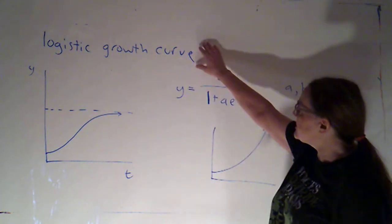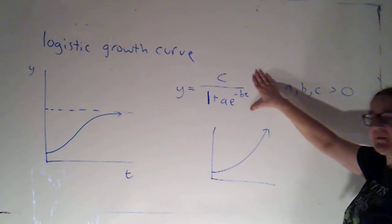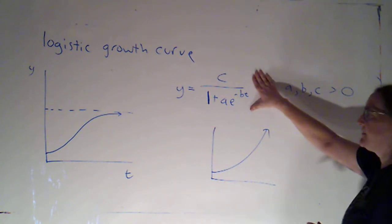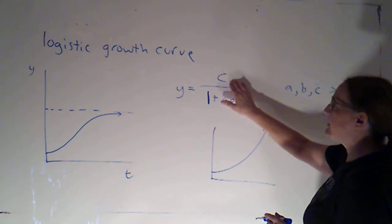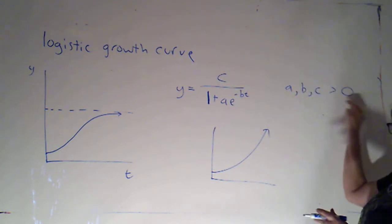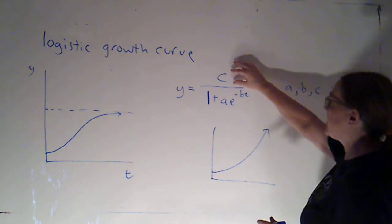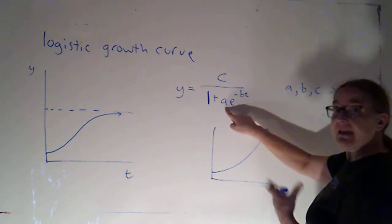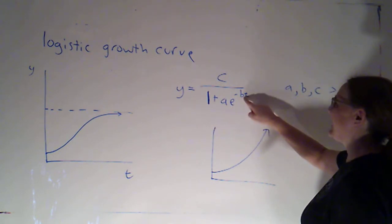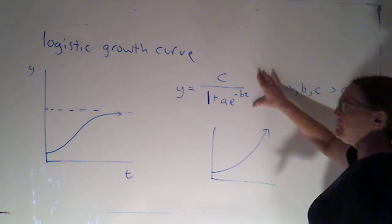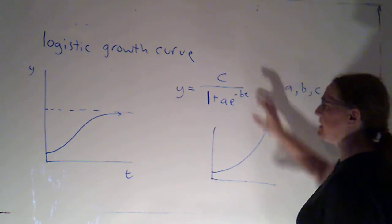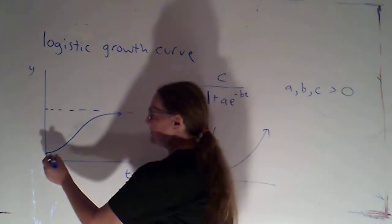So a logistic growth curve has a formula that looks something like this: y is equal to c over 1 plus ae to the negative bt, where a, b, and c here are just positive constants. A little bit more complicated formula, but it's kind of neat to see what the curve does.